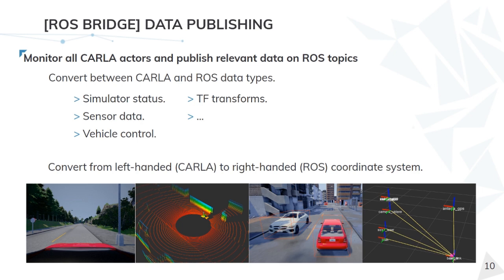The data publishing node continuously monitors all Carla actors and publishes all relevant information on ROS topics. It monitors the Carla world to detect new or deleted actors that need to be added to or removed from the ROS publishing pipeline. The data published includes sensor data, ground truth obstacles, and the transforms for each sensor and vehicle, making all Carla information available through ROS topics.